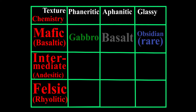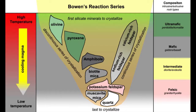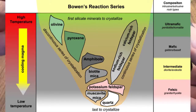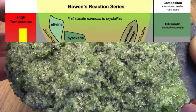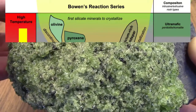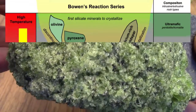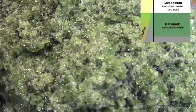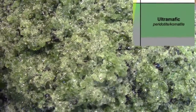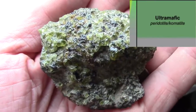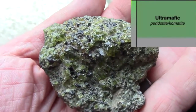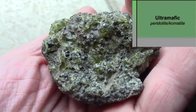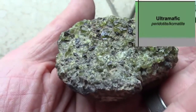Rocks forming from mafic magma are made of the first minerals to come out of Bowen's reaction series, which we met back in episode 14. The first minerals to come out are olivine and calcium plagioclase, which give green and black colors respectively. Igneous rocks made of these minerals are said to be ultra-mafic, and they tend to be green with black specks. When phaneritic, we call it peridotite, and it is rarely aphanitic, but in such cases we call it komatiite.